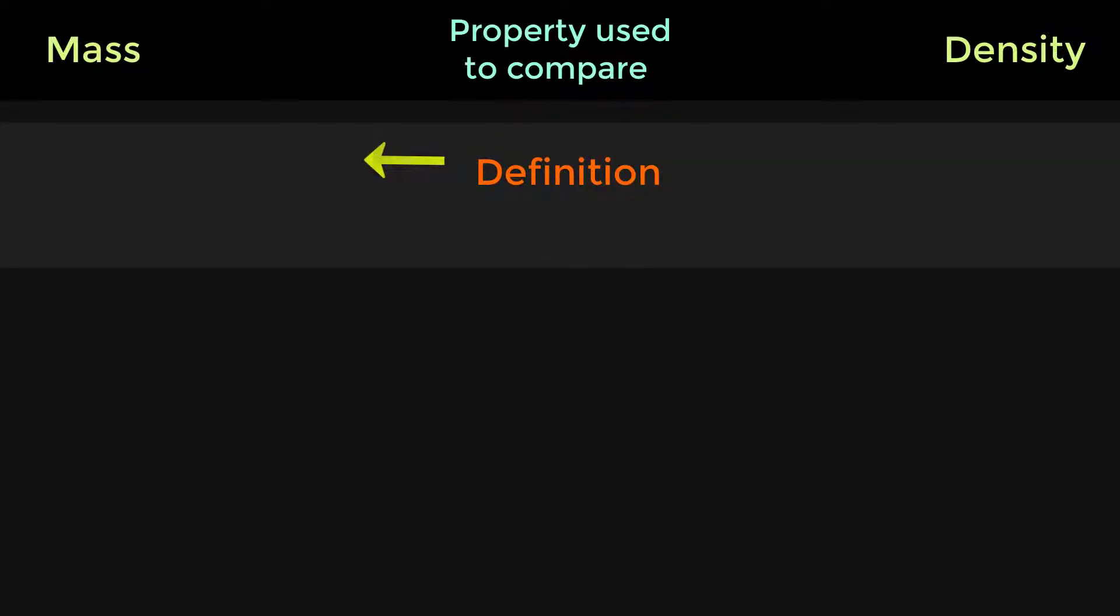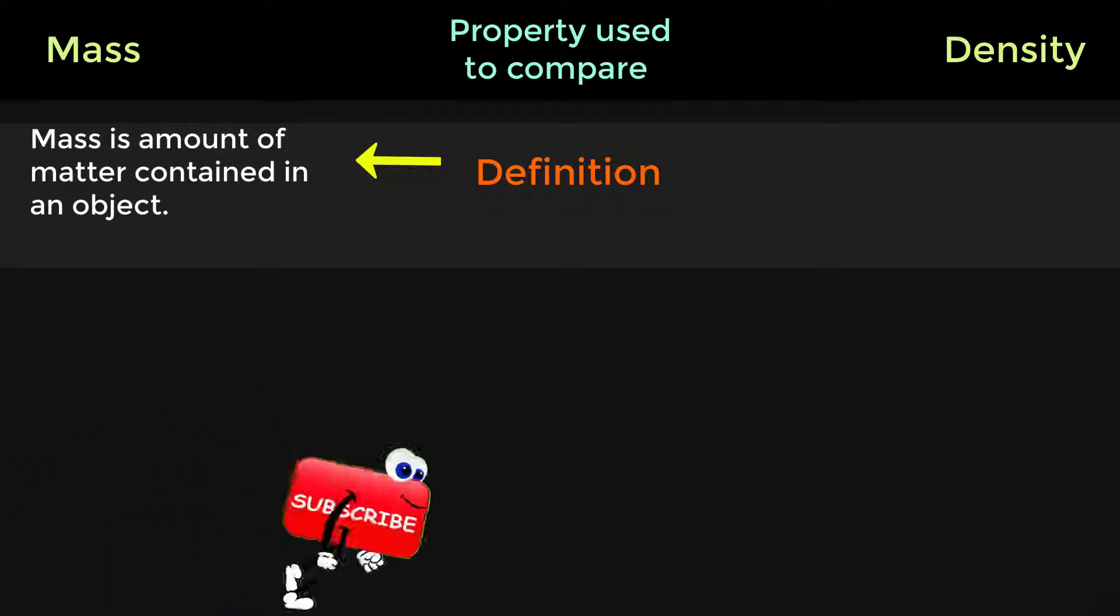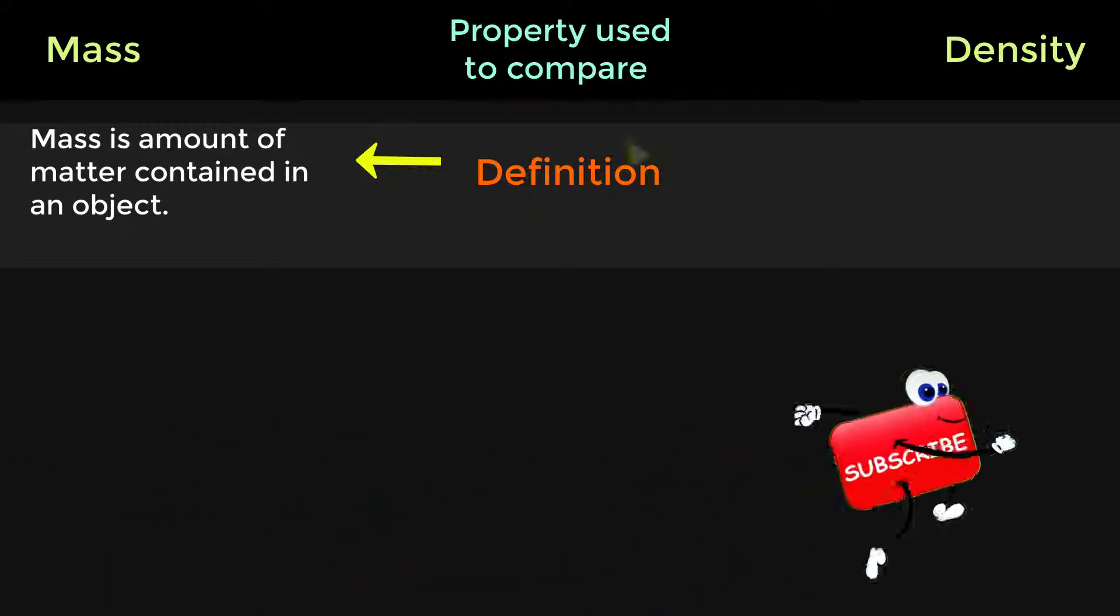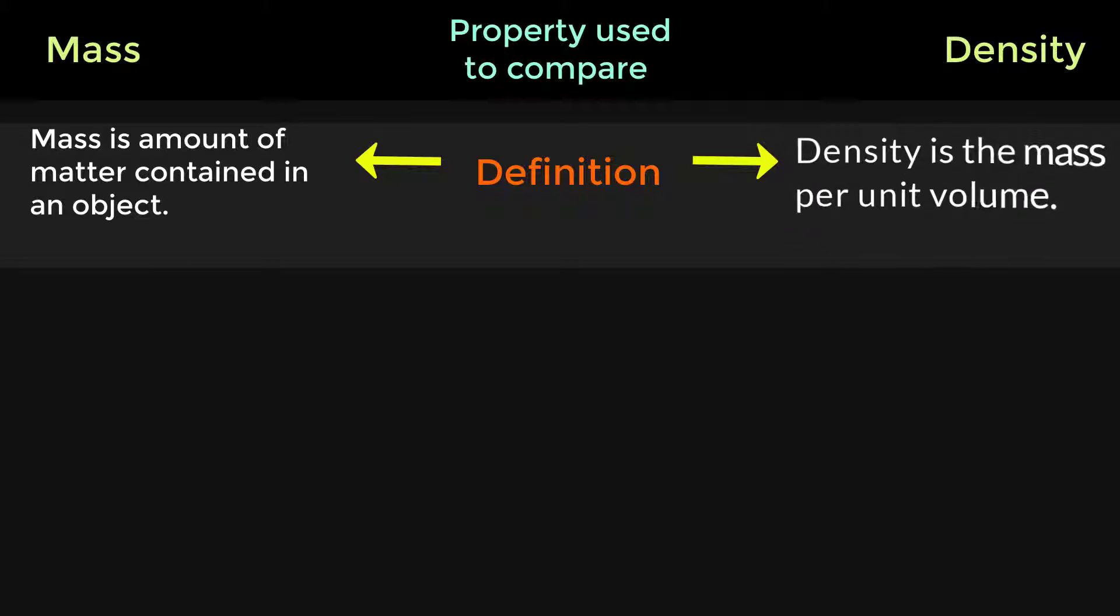Definition. Mass is the amount of matter contained in an object. Density is the mass per unit volume.